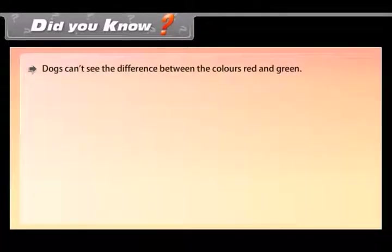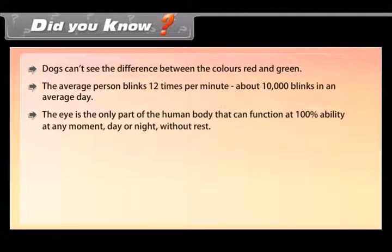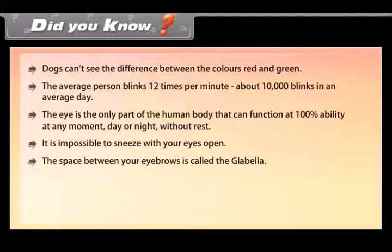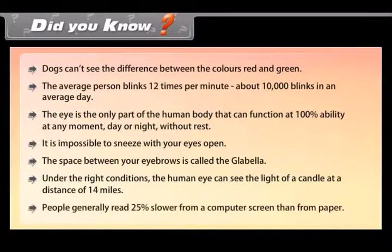Dogs cannot see the difference between the colors red and green. The average person blinks 12 times per minute — about 10,000 blinks in an average day. The eye is the only part of the human body that can function at 100 percent ability at any moment, day or night, without rest. It is impossible to sneeze with your eyes open. The space between your eyebrows is called the glabella. Under the right conditions, the human eye can see the light of a candle at a distance of 14 miles. People generally read 25 percent slower from a computer screen than from paper.